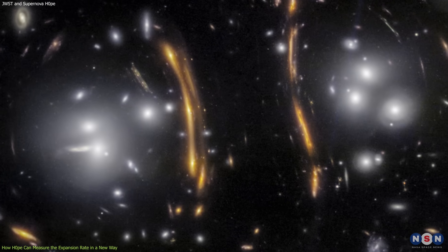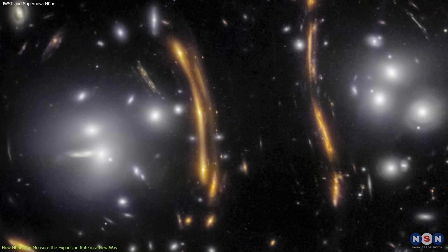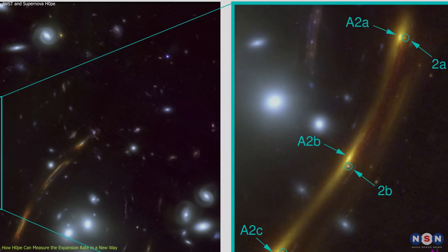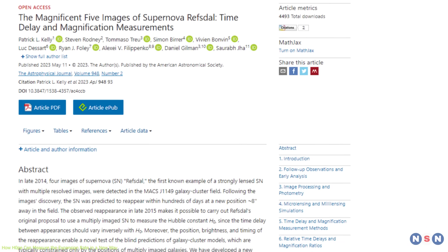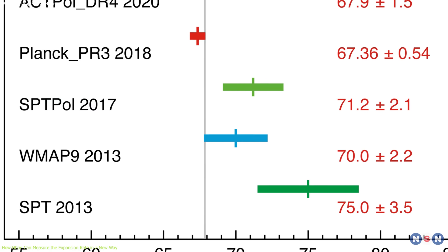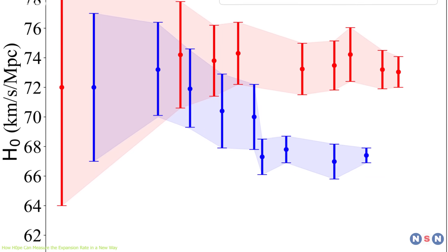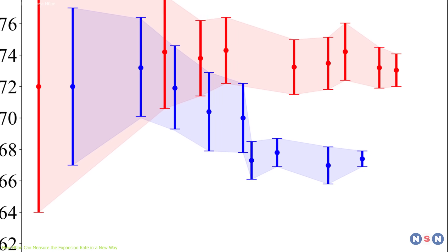It also has very high quality data from James Webb and other telescopes that can measure its brightness and redshift with great precision. By using this method, Dr. Rodney and his team estimated a value of H0 of about 71 kilometers per second per megaparsec, which is closer to the standard candle method than to the CMB method.